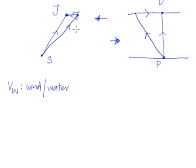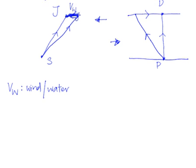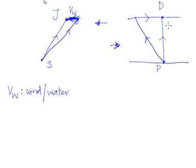From our diagram, VW is rather easy to identify — of course, this is the wind, VW in this direction. When we talk about the river example, this is the river — this is of course the VW, the river current, the water current.